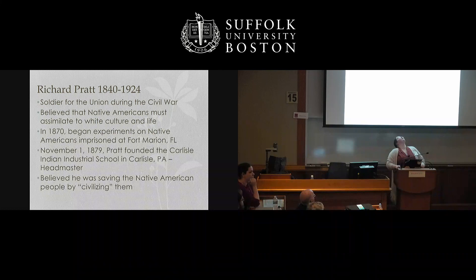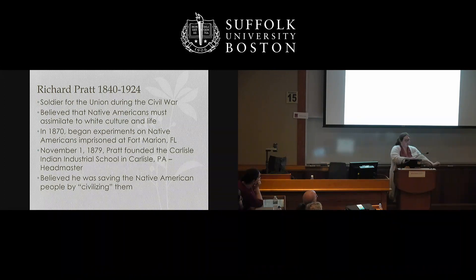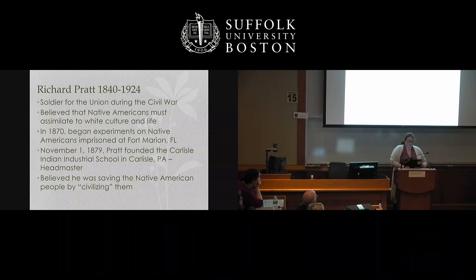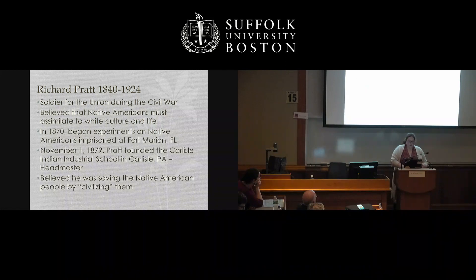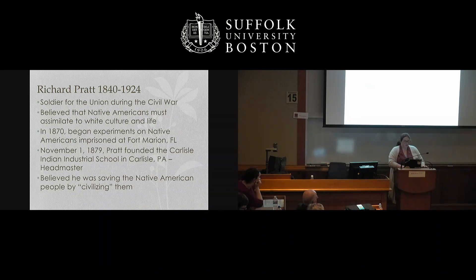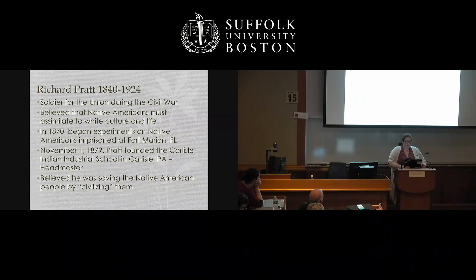Richard Henry Pratt was a Union soldier during the Civil War. He began experiments on Native Americans imprisoned at Fort Marion in Florida in 1870 to see if his boarding school program might work. The government bought into the idea that you could 'kill the Indian in him and save the man.' He believed that if you took Native children and placed them hundreds if not thousands of miles from their families, those ties would be severed, making it easier to force them to read, write, and speak English and assimilate.